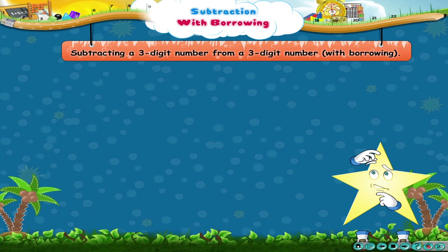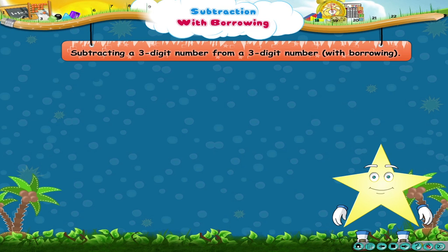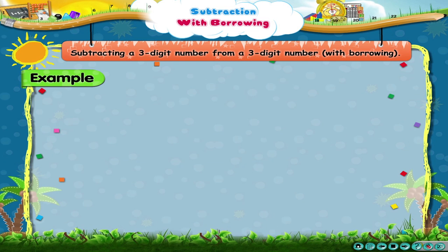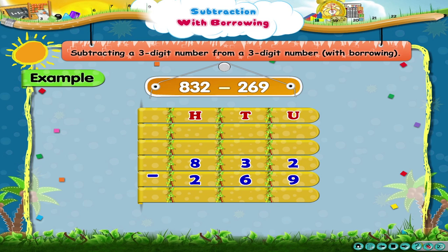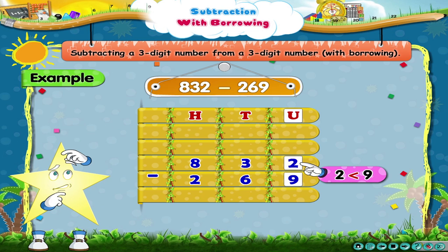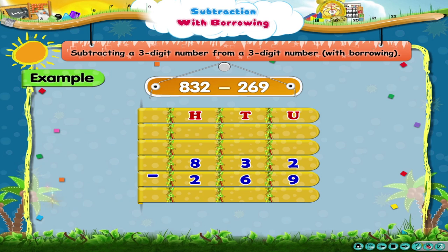Isn't borrowing easy, Starry? Oh, so you want to solve another example. Fine. Here it is. 832 minus 269. Now, 2 units are smaller than 9 units. Hence, we cannot subtract 9 from 2. So, what do we do, Starry? Right. We borrow 10 from the tens place.